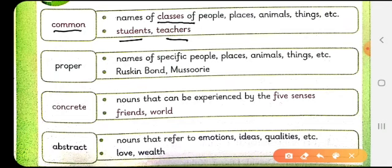Then we have the next noun, proper noun, which says that it is the name of specific people, place, animal, things like Ruskin Bond, Mussoorie and Lucknow, Kanpur, America, New York. These are all proper nouns.